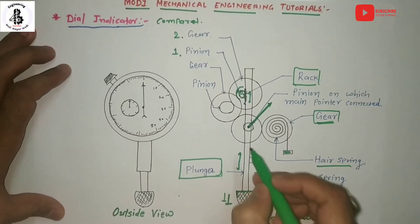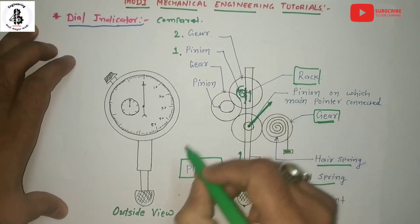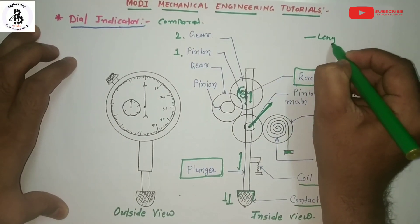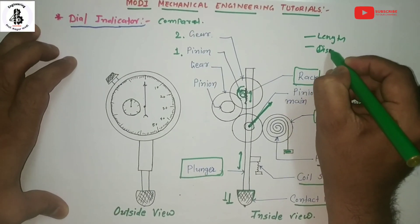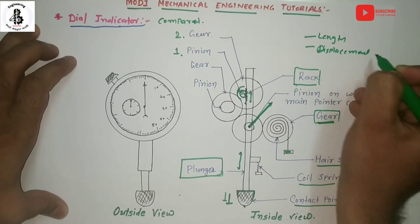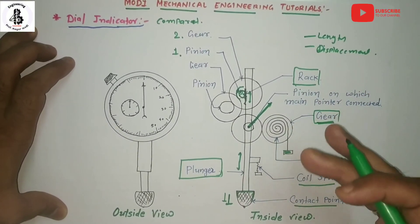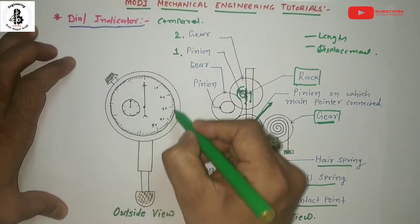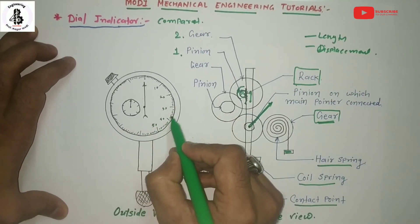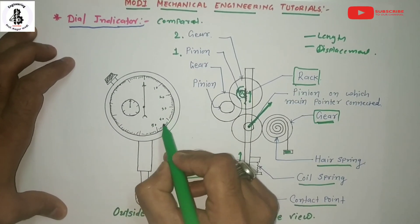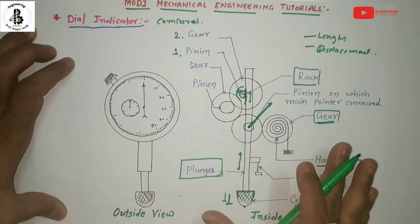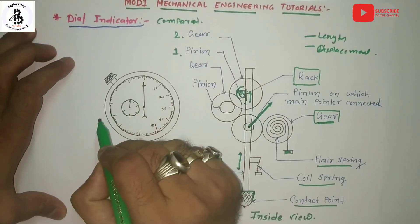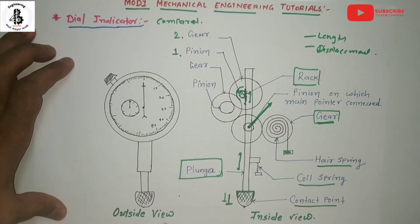Basically, the dial indicator — also called a dial gauge — amplifies the length, displacement, or any change of dimensions or position of a particular component, measuring it on a rotational circular scale. By the construction of the dial indicator, these linear movements are converted into and measured as circular movements. That is the basic construction of the dial indicator.